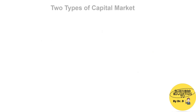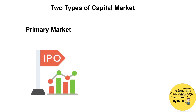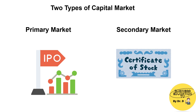There are two types of capital market. The first is the primary market, where new securities are issued and sold for the first time. The second is the secondary market, where existing securities are being traded.